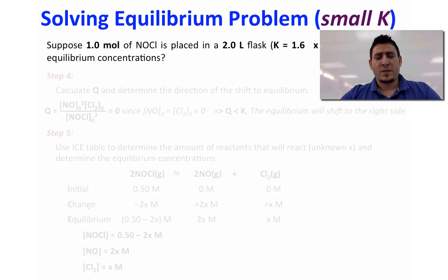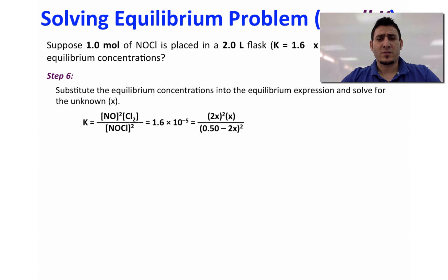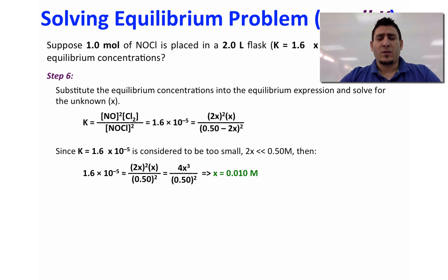Now to find X in step 6 we can substitute the equilibrium concentrations in their values in the expression of K. Now since K is very small so the reaction favors the reactant side. So the value of X will be expected to be very small to the point that we can neglect it compared to 0.50. So therefore we can rearrange this expression to be equal to 4x cubed divided by 0.50 squared and this will make it easy on us to find X. So X is found to be 0.010 molar.